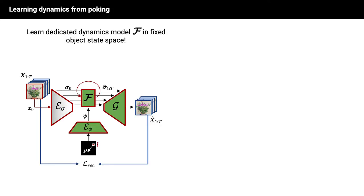Hereafter, we will learn a dedicated dynamics model, F, which gets as input the initial object state, sigma0, corresponding to the initial frame of a training video, and an encoding of the interaction estimated between the start and end frames of this video.